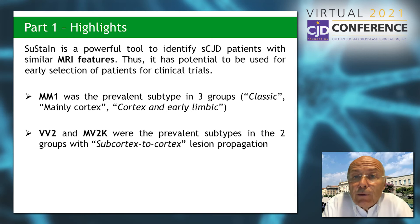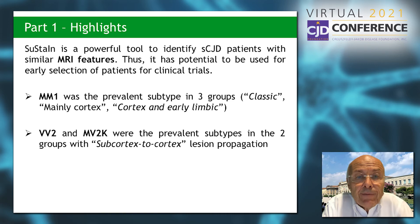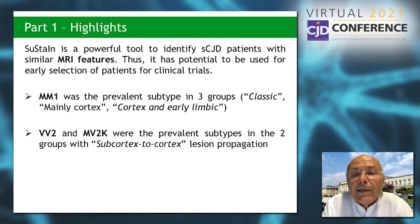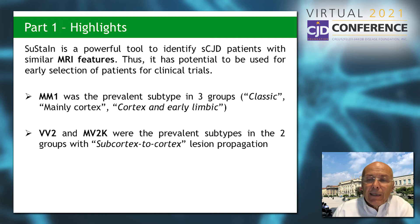SUSTAIN is a powerful tool to identify CJD patients with similar MRI features, and has potential to be used for early selection of patients for clinical trials. To summarize: MM1 was the prevalent subtype in the three groups with classic, mainly cortex, and cortex-with-early-limbic involvement, while VV2 and MV2K were the prevalent subtypes in the two groups with subcortex-to-cortex lesion propagation.